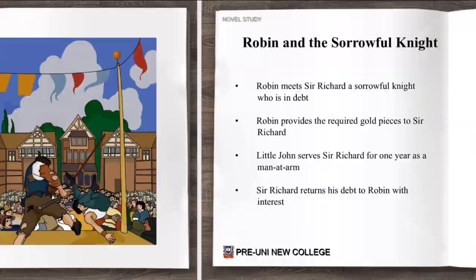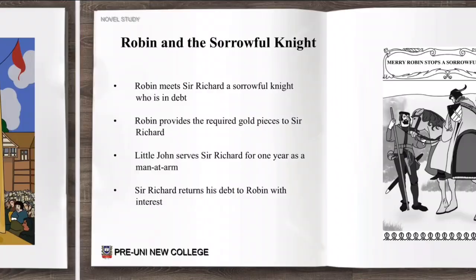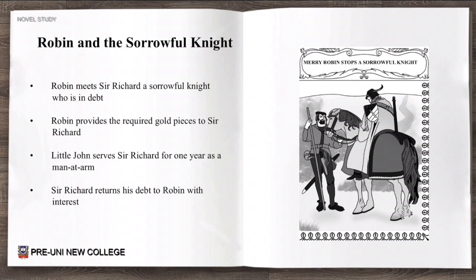Robin and the Sorrowful Knight is the next chapter, in which Robin meets Sir Richard, a sorrowful knight who is in debt — he owes people a lot of money. Robin provides the required gold pieces to Sir Richard, the hundred gold pieces he received earlier. Little John serves Richard for one year as a man-at-arms, like a bodyguard protecting him. Sir Richard then returns his debt to Robin with some interest on top.